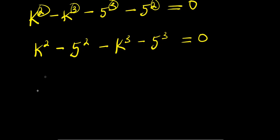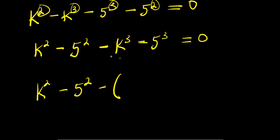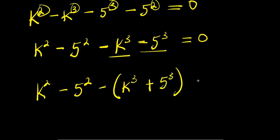From here we have k squared minus 5 squared, then factoring out a minus sign, we have minus k cubed minus 5 cubed, and this equals zero.